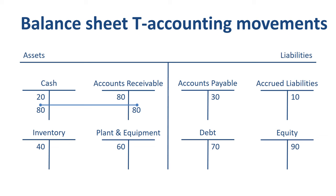The second transaction is the purchase of a new piece of equipment. This is recorded as a debit to plant and equipment, and a credit to cash.